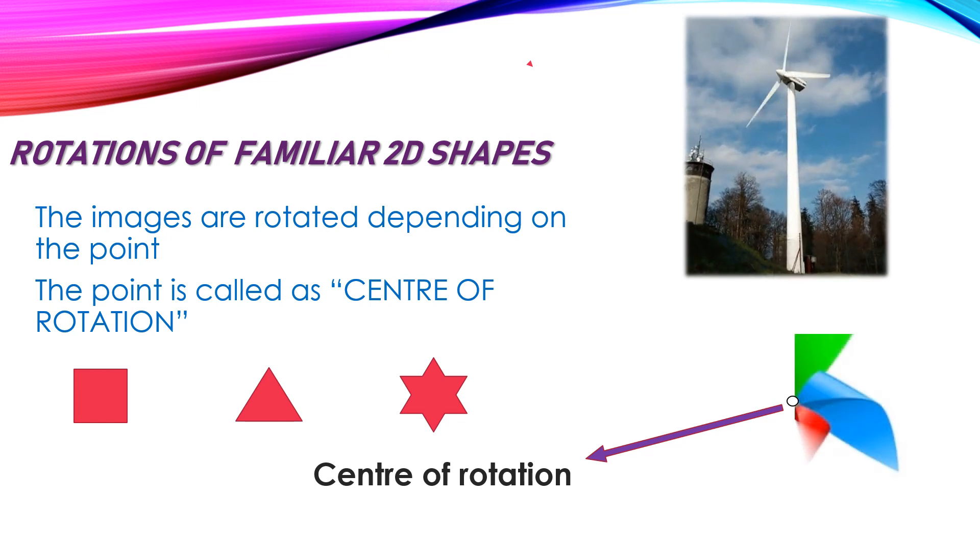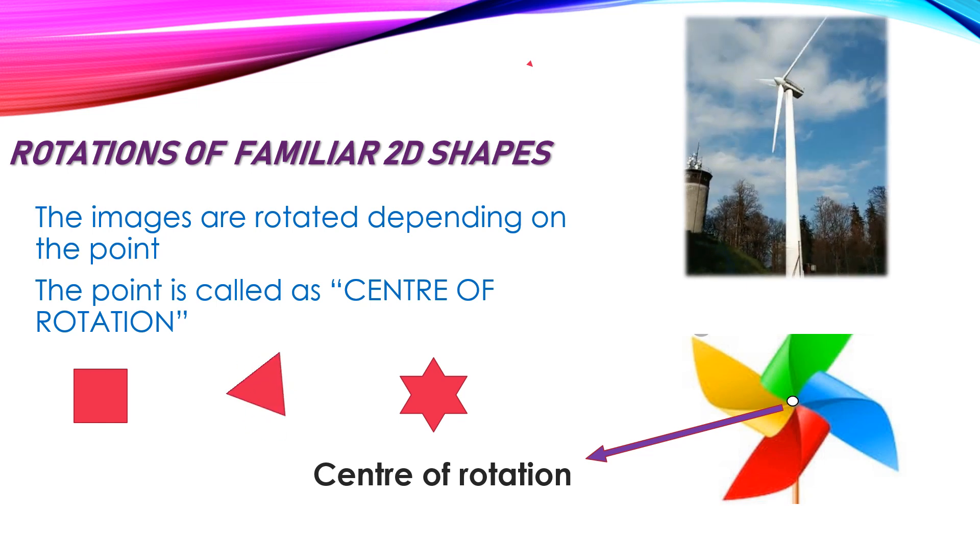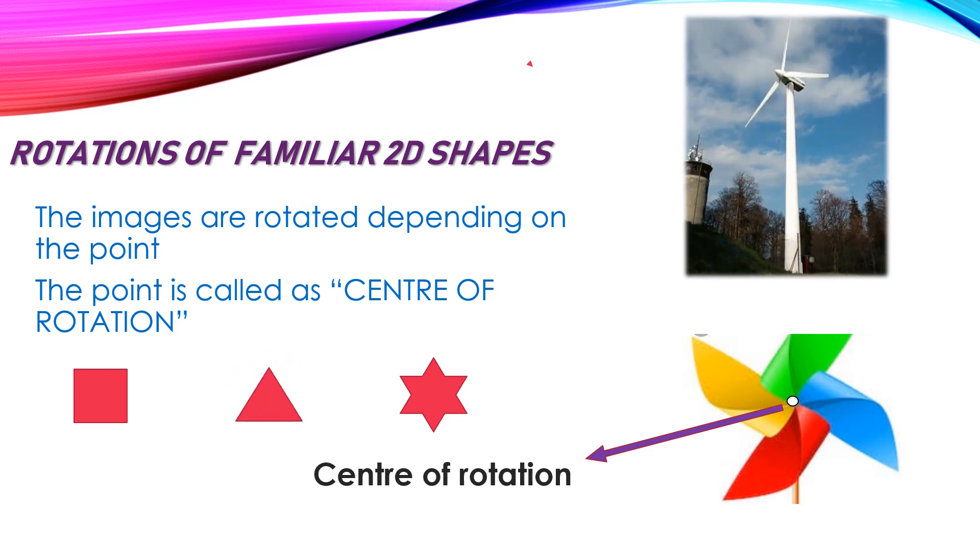Come down with the second example. Can you identify? Here is the dot. That is the center of rotation. So square also rotated now. Then triangle. Then star. Hope you understand. The next slide is a very interesting clipping. Shall we go? Are you waiting? Yes, we can go now.